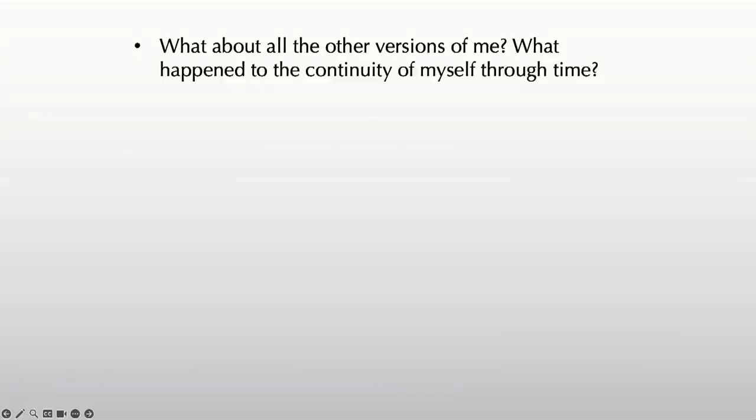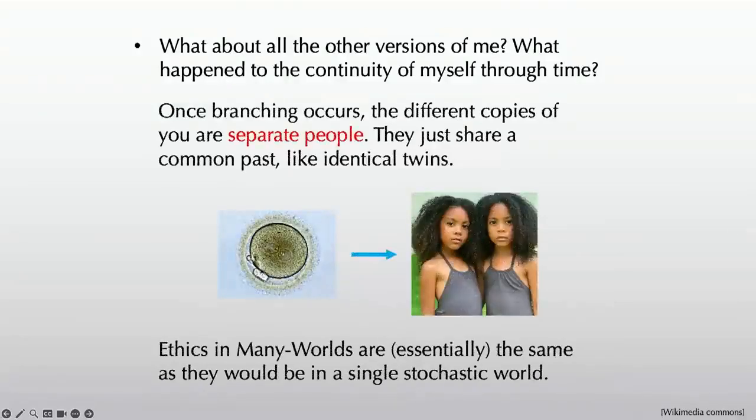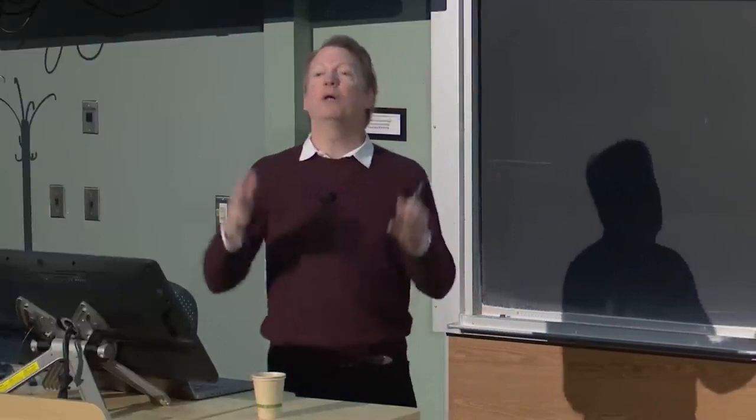And the answer is, you just got to think this through. There's something new going on in many worlds, no doubt. The thing that is new is that the history of a person is more like a branching tree than a single line. But once those branches happen, they are now separate people. Identical twins start as the same single cell, but they split apart and become different people. No one tries to say, oh, it's okay if one twin dies because we have the spare over here. They're two separate people.